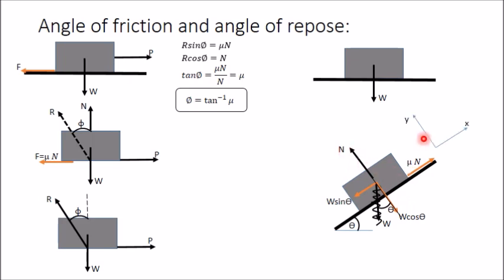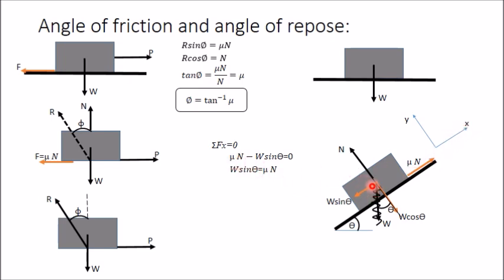Take the direction along the plane as positive X and perpendicular to it as positive Y. Applying the equation of equilibrium, summation Fx = 0: forces along X are μN and, opposite to it, W sin θ. So μN − W sin θ = 0, giving W sin θ = μN. Similarly, applying summation Fy = 0: N − W cos θ = 0, giving W cos θ = N.